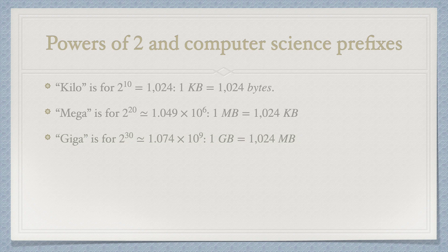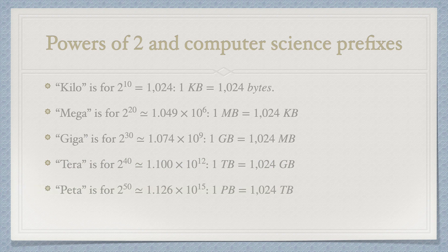The prefix giga is for 2 to the power 30, that is about 1.074 multiplied by 10 to the power 9. 1 gigabyte is 1024 megabytes. The prefix tera is for 2 to the power 40, that is about 1.110 times 10 to the power 12. 1 petabyte is 1024 terabytes.